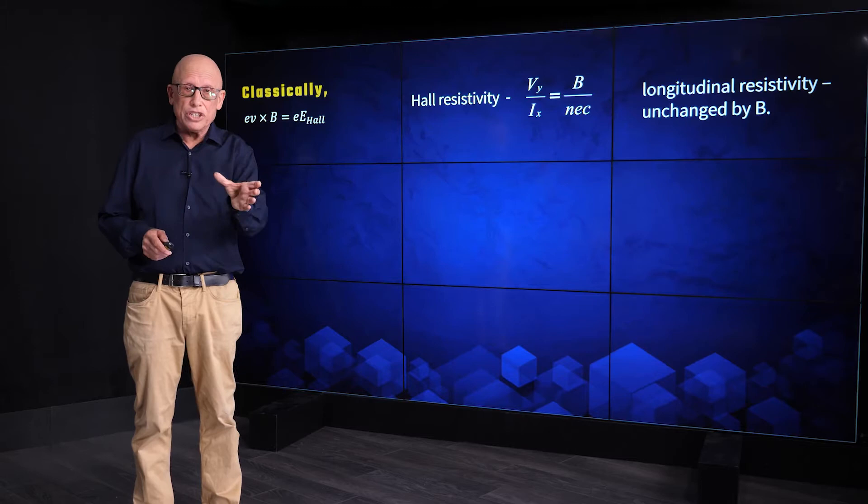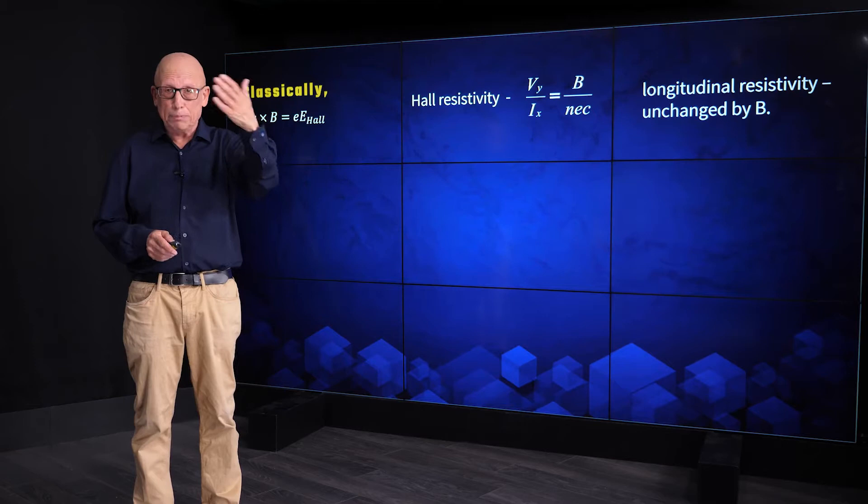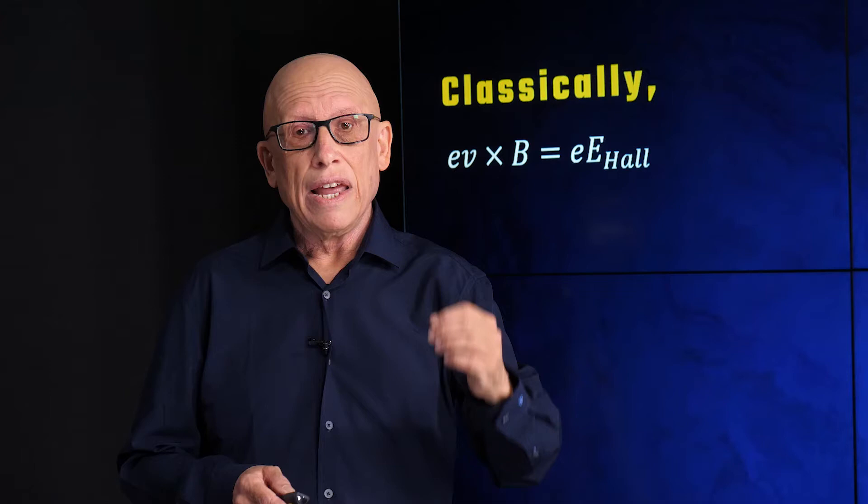Once the Lorentz force is cancelled by the Hall voltage, electrons flow as if there is no magnetic field. Therefore, classical physics expects the longitudinal resistivity to be independent of the magnetic field.